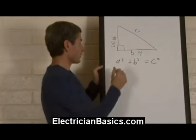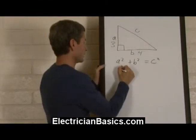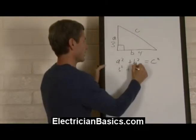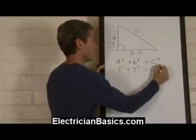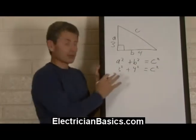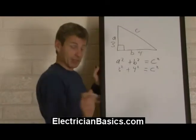Well, we have a squared, which is 3 squared, plus 4 squared equals c squared. So 3 squared is 3 times 3, which is 9.